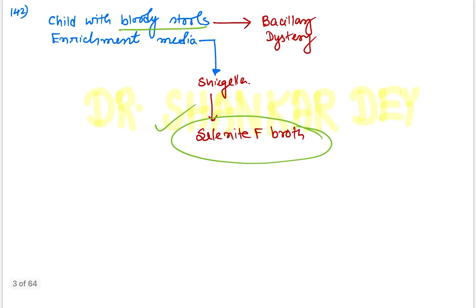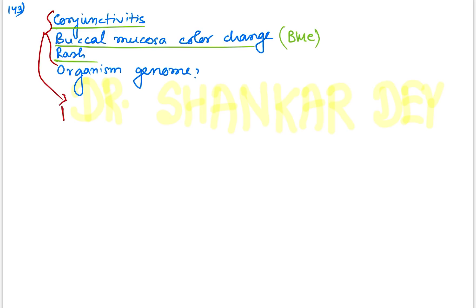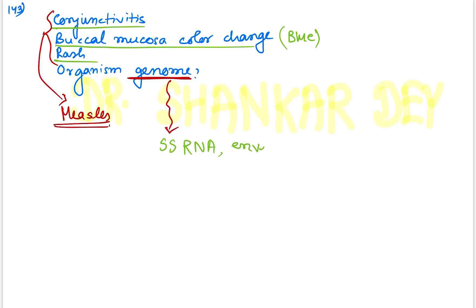Question 143: A child presented with conjunctivitis, then a few days later there was a change in buccal mucosa with blue-colored spots, then the child develops rash. This is the typical sequence of events in measles. The question asked about the organism's genome. The answer is single-stranded RNA, enveloped virus — measles virus is an ssRNA enveloped virus.